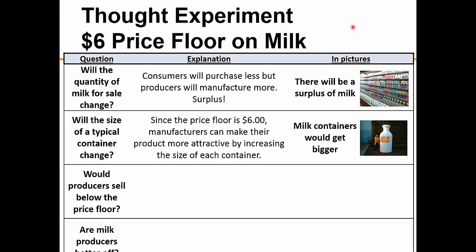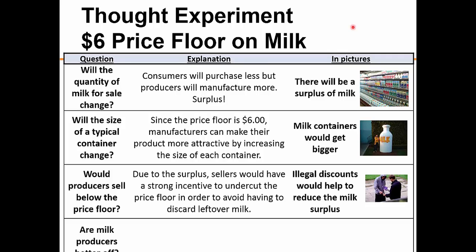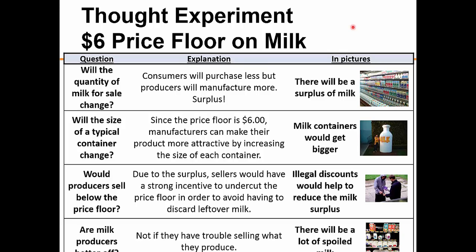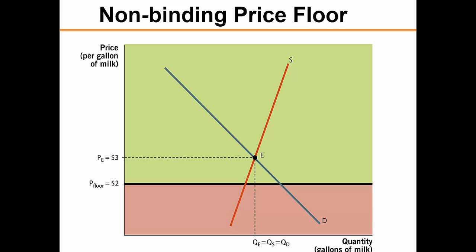Also, since the price floor of $6 is high enough, manufacturers can make their products more attractive by increasing the size of each container to attract buyers. Because of the surplus, sellers will have a strong incentive to undercut the price floor in order to avoid having discarded milk left over — otherwise they will have a lot of surplus that will go bad and have to be thrown away. A price floor set below the equilibrium will be non-binding. Since the actual market price is above the legally established minimum price, the price floor does not prevent the market from reaching equilibrium. Consequently, the price floor has no impact on the functioning of the market.